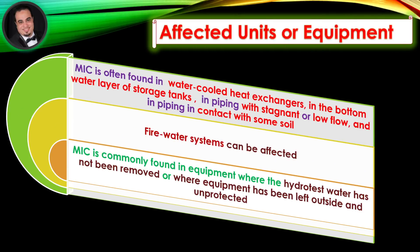Affected units or equipment. Microbiologically influenced corrosion is often found in water-cooled heat exchangers, in the bottom water layer of storage tanks, in piping with stagnant or low flow, and in piping in contact with some soil.